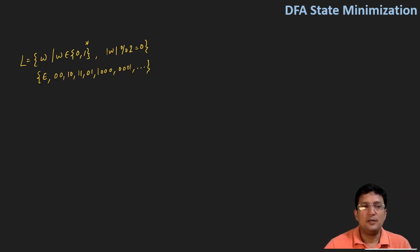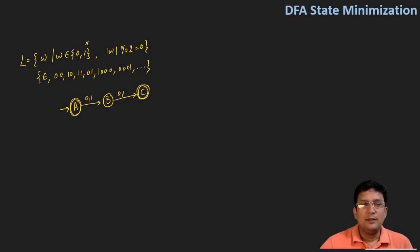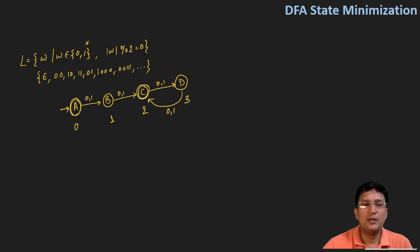Let's draw a DFA for this. I start with state A as the start state, since epsilon must be accepted. If I take a zero or one, I move to state B, which is a non-final state. If I get another zero or one, I move to the final state. If I get another zero or one, I move to another non-final state, and then on zero or one I reach state C, which is a final state. So: zero-length string accepted, one-length rejected, two-length accepted, three-length rejected, four-length accepted, and so on. All even-length strings are accepted.